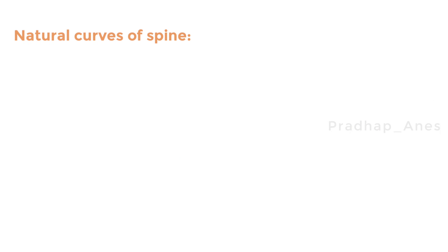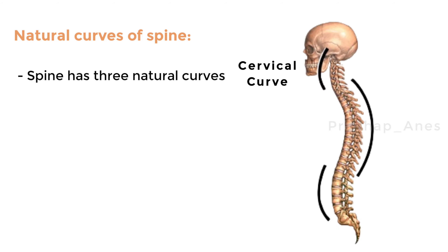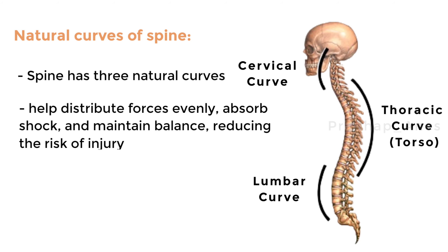The natural curves of the spine. The spine has three natural curves: the cervical curve in the neck region, the thoracic curve in the torso, and the lumbar curve in the lower back. These curves help distribute forces evenly, absorb shock, and maintain balance, reducing the risk of injury.